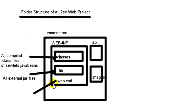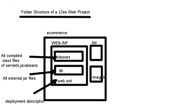The web.xml is called the deployment descriptor of your project. It is going to describe all the components that we are going to use — like servlets: what is the servlet name, where it is; if we are using a filter: what is the filter name, where it is. All these things we put within this descriptor XML file.